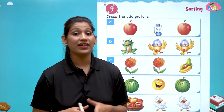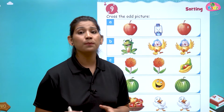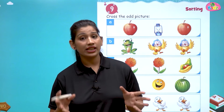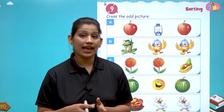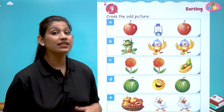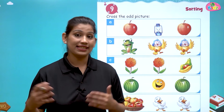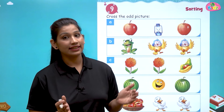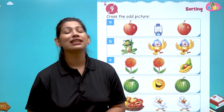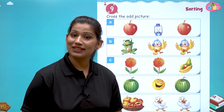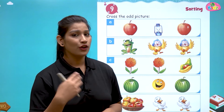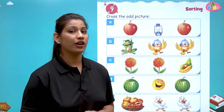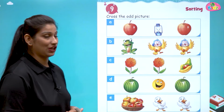You must have experienced that sometimes mama keeps all things of the same size in one box and things of a different size in another box. She also does sorting. Things that are the same go to one side, and different ones go to another. This is called the sorting process. After today's session, you all will be aware of sorting. Let us start!